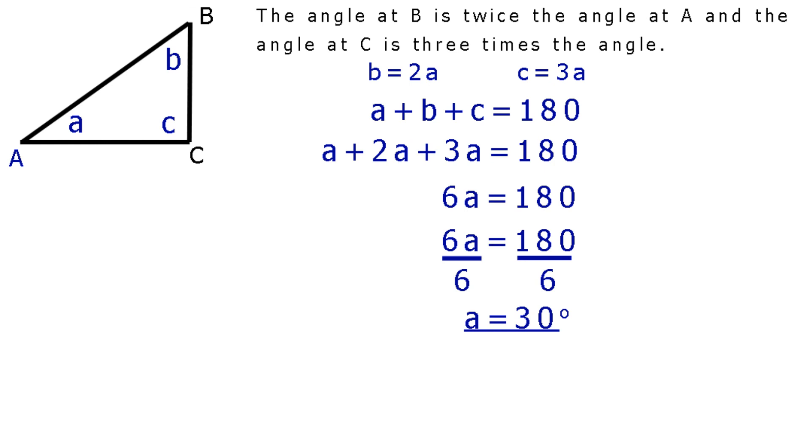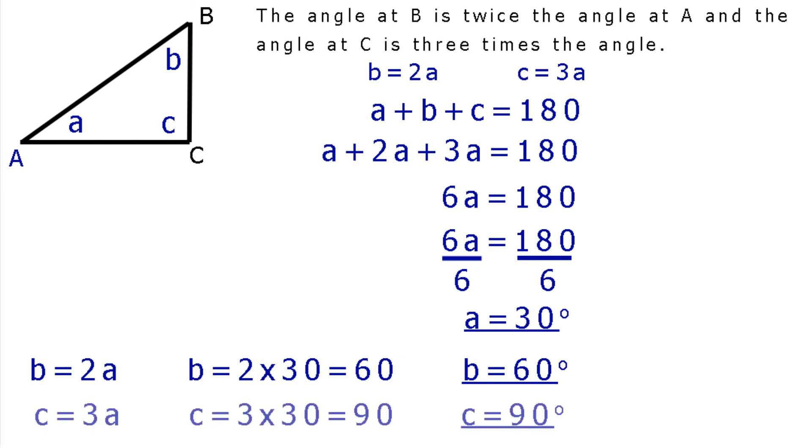Now to calculate b. We know that b equals 2a. Substituting for a, which equals 30 degrees, we have b equals 2 times 30. So, b equals 60 degrees. Now to calculate c. We know that c equals 3a. Substituting for a, which equals 30 degrees, we have c equals 3 times 30, which equals 90 degrees.